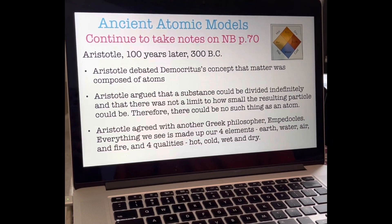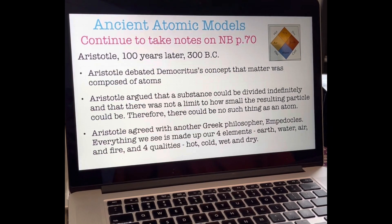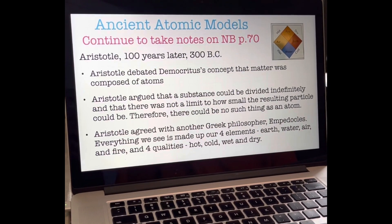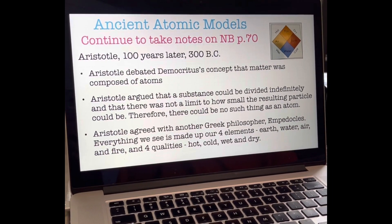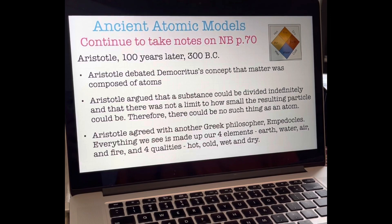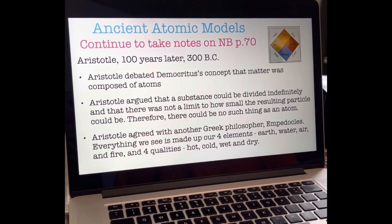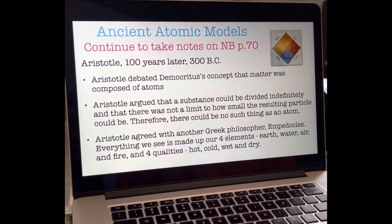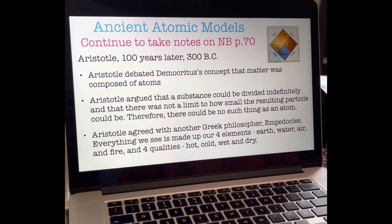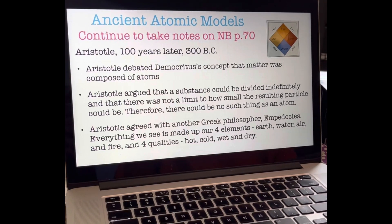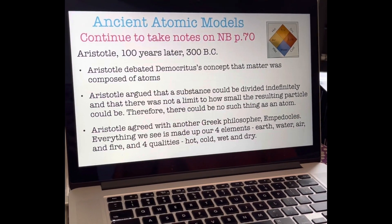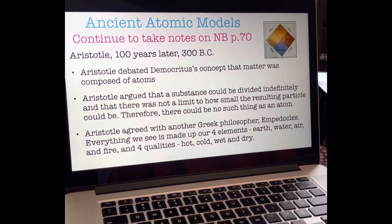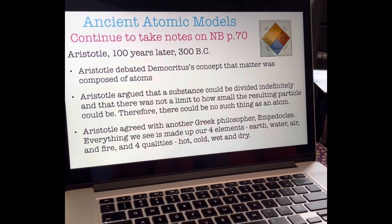This is why alchemists of the Dark and Middle Ages were continually trying to turn metal into gold. They reasoned, based on Aristotle's theory, that if all substances possess the same four elements in different proportions, why couldn't one substance be transformed into another?